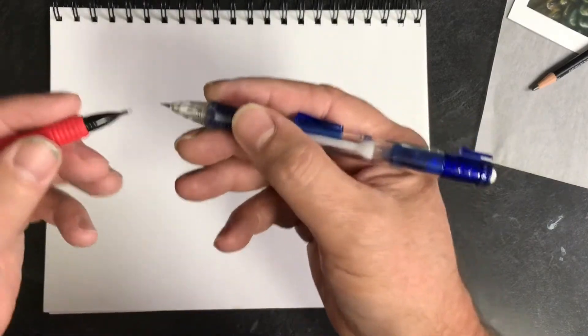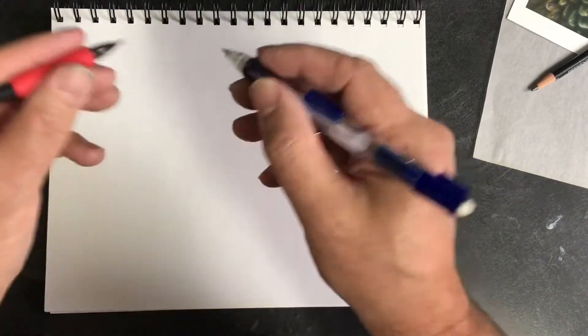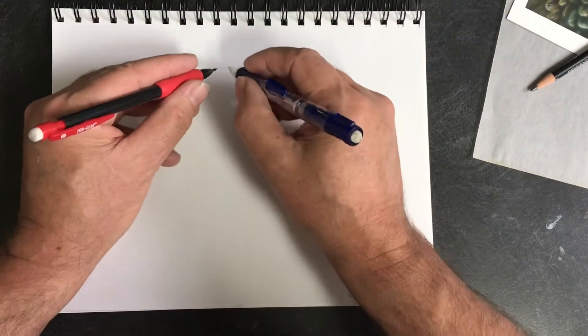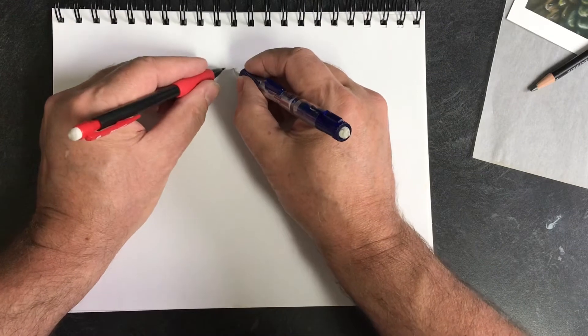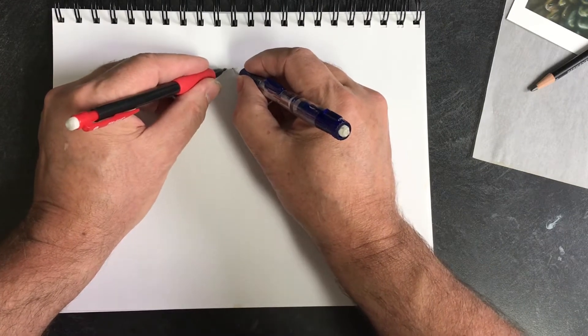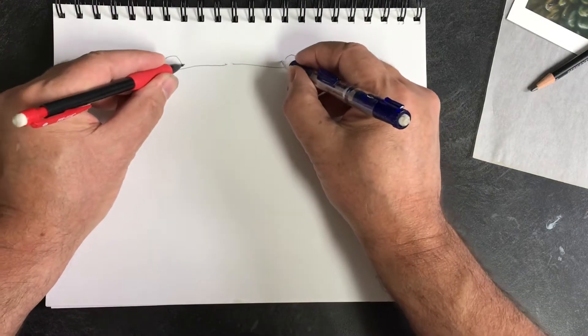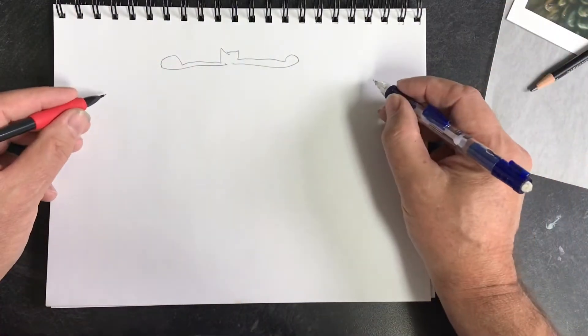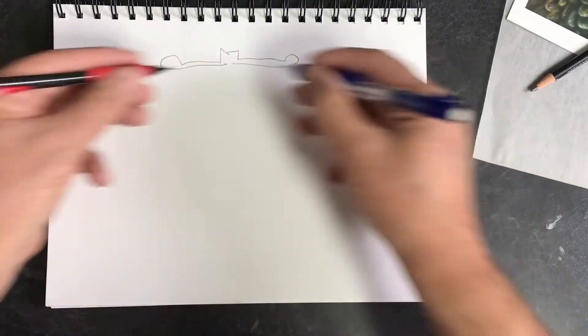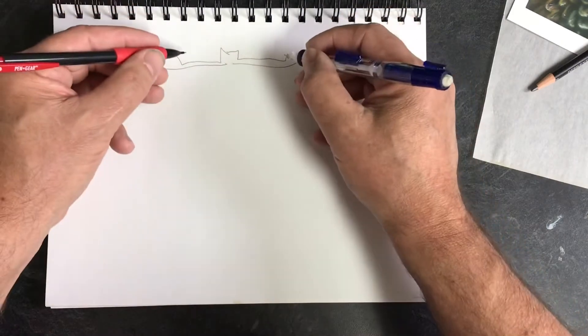I want to show you this mirror drawing technique where we do them both at the same time. If I place both my pencils on the page at the same time, I can draw approximately the same shape. Now the cool thing about this is your left hand or your non-dominant hand just sort of follows what's going on.